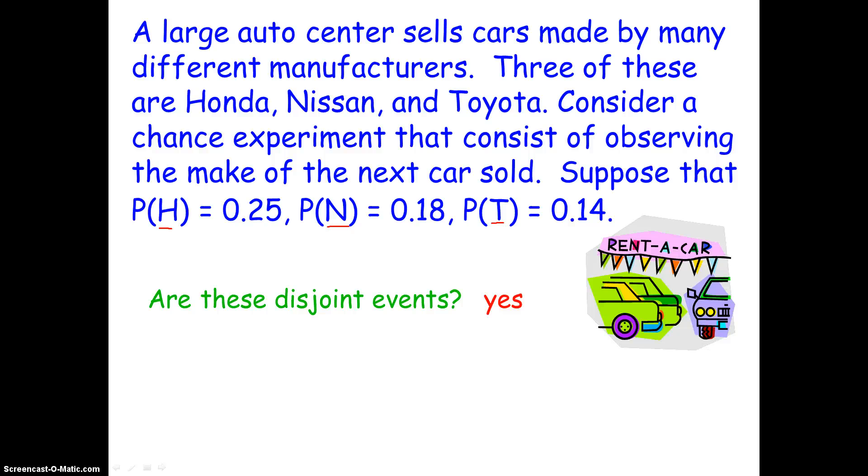And here's the reasoning why. They're looking for the next car sold. If the next car sold is a Honda, then it cannot be a Nissan or Toyota, right? I mean, you can't buy a single car that's of two brands. That's impossible. So when one car is bought of a certain brand, the other two brands automatically are not available for purchase. There can only be one brand for each car sold. So yes, they are disjoint events. Only one brand can be bought at a time.